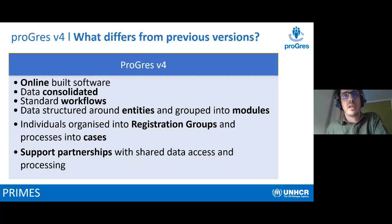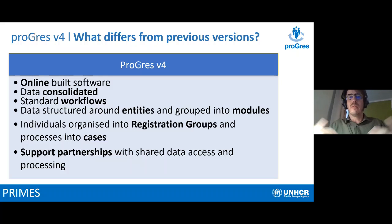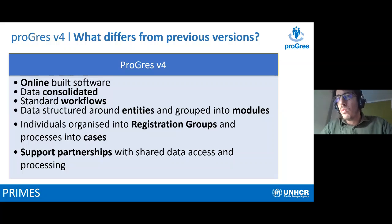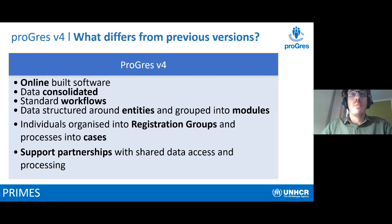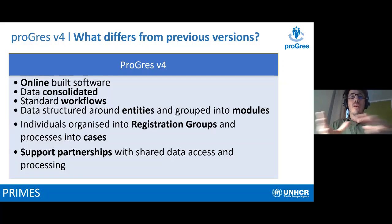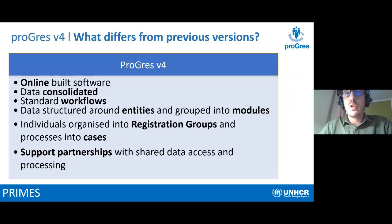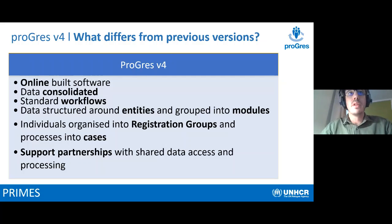Apart from registration groups, individuals can also be part of what we call cases — this is where the case management aspect of Progress comes in. Progress isn't just a database; we also use it to process different cases such as refugee status determination, resettlement, child protection, and protection case management. These are managed in different modules of Progress, but they all build on the same registration data. An individual is administratively grouped inside a registration group but may be part of various cases that arise during the refugee life cycle.